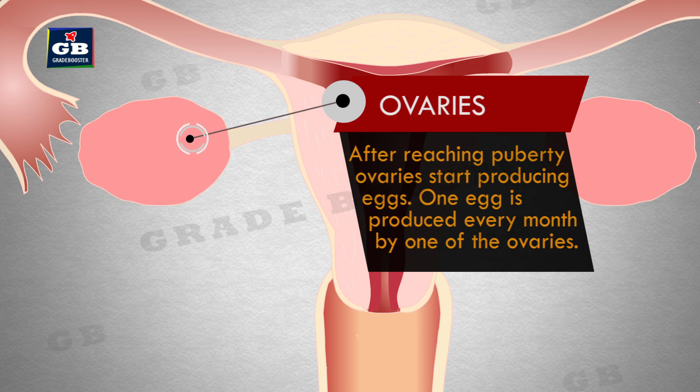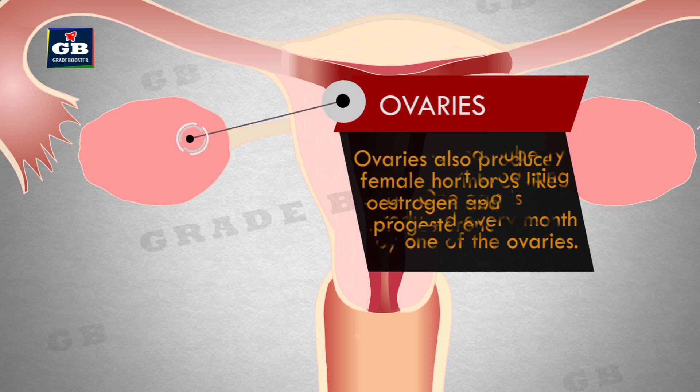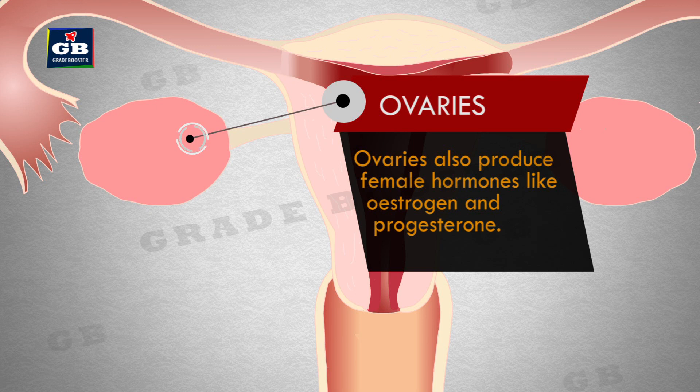Ovaries also produce female hormones like estrogen and progesterone.